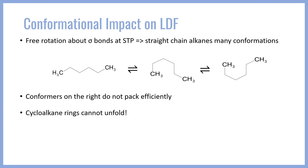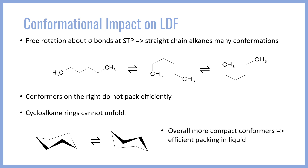It turns out cycloalkane rings cannot unfold — they cannot rotate freely, and are essentially ring-locked. For example, the cyclohexane ring is confined to oscillate between two conformations, flipping back and forth between two what are known as chair structures. Although they may not be linear, because they have no contributions from these bulky conformers, they overall pack more efficiently than straight chain alkanes, especially in liquid form. Because of this more efficient packing, cycloalkanes have significantly stronger LDFs and a much higher boiling point. This weird side effect of conformational switching goes to show how tricky and full of finesse the chemical world can be, and how much we need to pay attention to these microscopic factors.